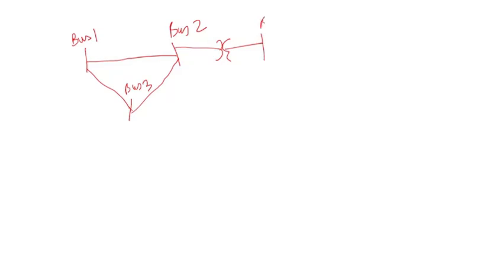Then you have a bus here, bus 4, and so on and so forth. You can draw so many buses, and you might have this going to another bus 5, bus 6, and so on.